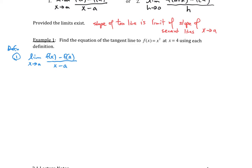We can rewrite this as the limit as x goes to 4 because our a value is equal to 4 in this particular case. Our f of x is x squared and our f of a is going to be 4 squared. The denominator is going to be x minus 4.